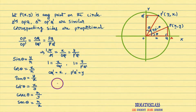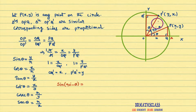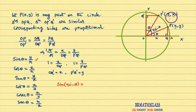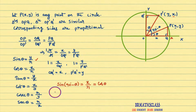Now we will find sin(90° - θ). Sin(90° - θ) is defined as the y-coordinate of point P' divided by the radius of the circle. The y-coordinate of P' is x, so sin(90° - θ) = x/R. From our initial definitions, x/R = cos θ. So sin(90° - θ) = cos θ.